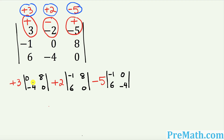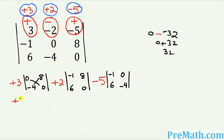Let's simplify the first 2×2 determinant. Cross-multiply: 0 times 0 equals 0, then put a minus sign, then cross-multiply the other way — 8 times negative 4 equals negative 32. So we have 0 minus (negative 32), and two negative signs together make a positive, giving us positive 32. The value of this determinant is 32, so we write positive 3 times 32.